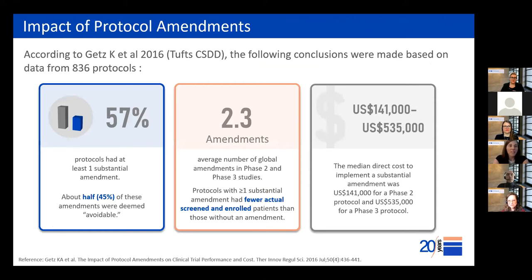The impact of protocol amendments is well described in the literature. Findings from Getz et al. showed that 57% of protocols had at least one substantial amendment, with an average of 2.3 amendments in Phase 2 and Phase 3 studies, and half of those amendments were deemed preventable. Protocols with at least one substantial amendment also had a reduced enrollment rate relative to the original plan, highlighting a real impact on recruitment, and the cost to implement substantial amendments is quite significant.